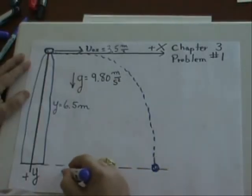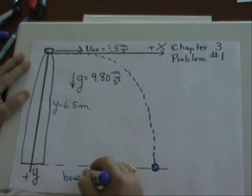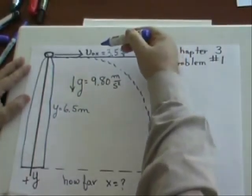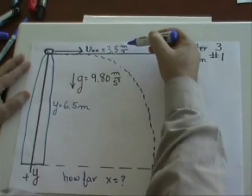The question is, how far did it land in the x direction? So we'll call x equals what? How far did it jump when it jumped off a 6.5 meter mountain at 3.5 meters per second?